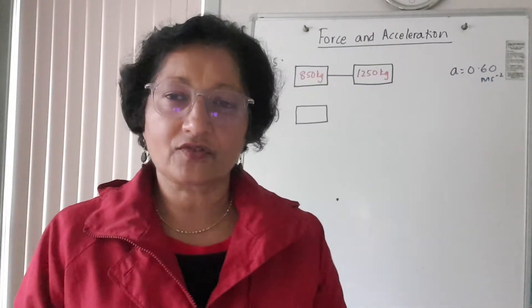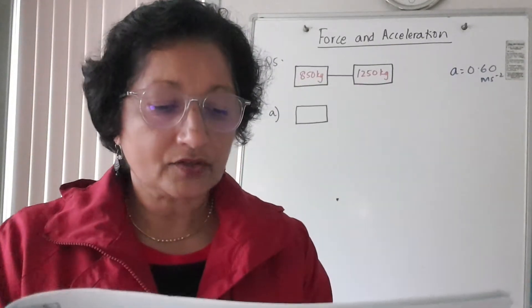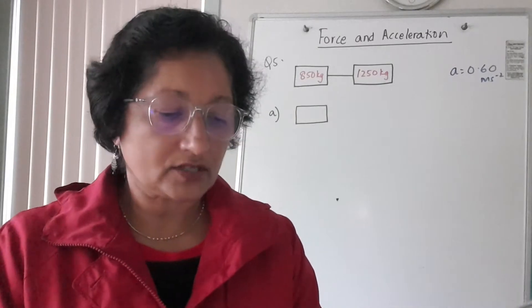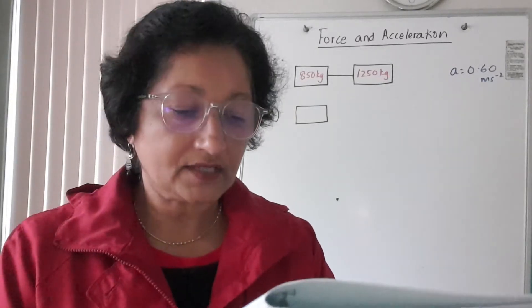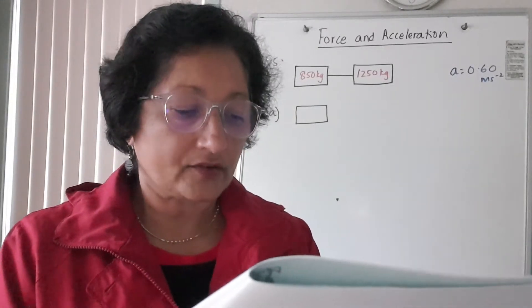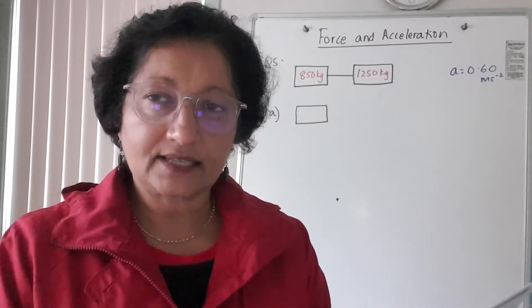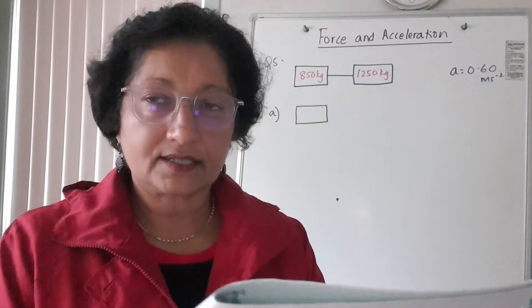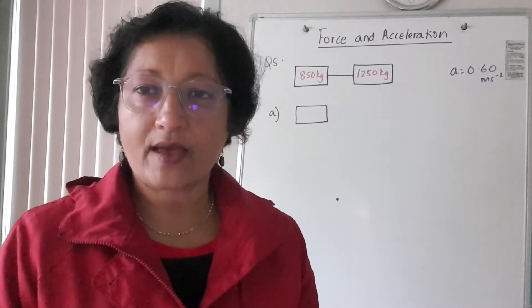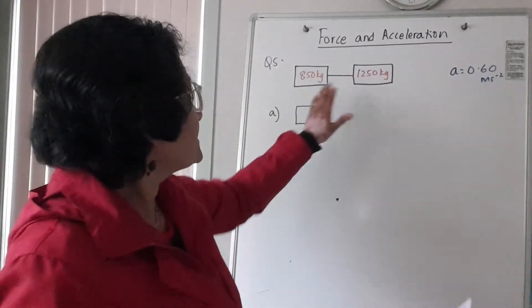So I'll just read through that question with you and talk you through it. A car of mass 1250 kilograms is towing another car of mass 850 kilograms. The car is accelerating at 0.60 meters per second squared.